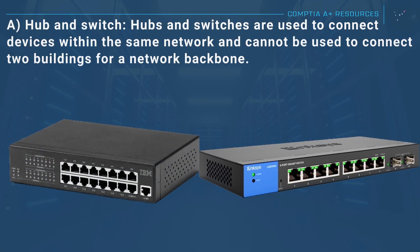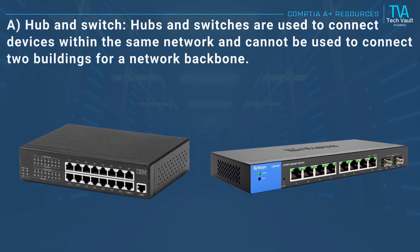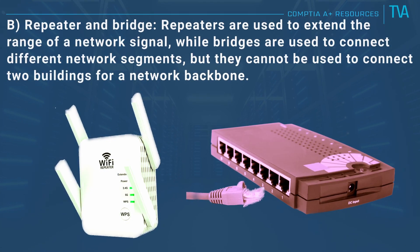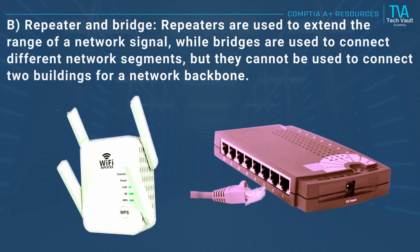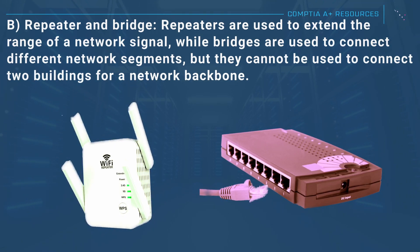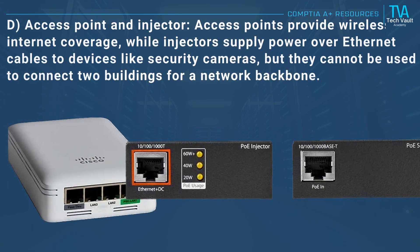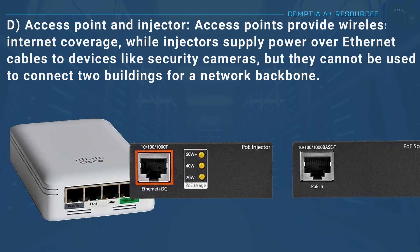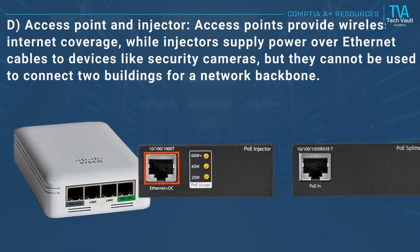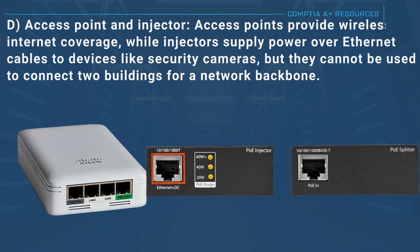A, hub and switch: hubs and switches are used to connect devices within the same network and cannot be used to connect two buildings for a network backbone. B, repeater and bridge: repeaters are used to extend the range of a network signal, while bridges connect different network segments, but they cannot be used to connect two buildings for a network backbone. D, access point and injector: access points provide wireless coverage while injectors supply power over Ethernet cables, but they cannot be used to connect two buildings for a network backbone.